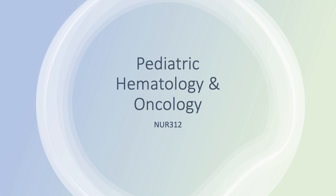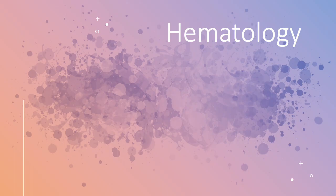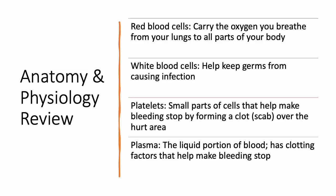Hello everyone and welcome to our video on pediatric hematology and oncology. Let's start with a quick discussion about hematology. A lot of what we go over today is going to relate back to the three cell lines that you should all know. If you remember these three cell lines, your understanding of anything to do with hematology and oncology will be much easier. The three cell lines are white blood cells, red blood cells, and platelets.